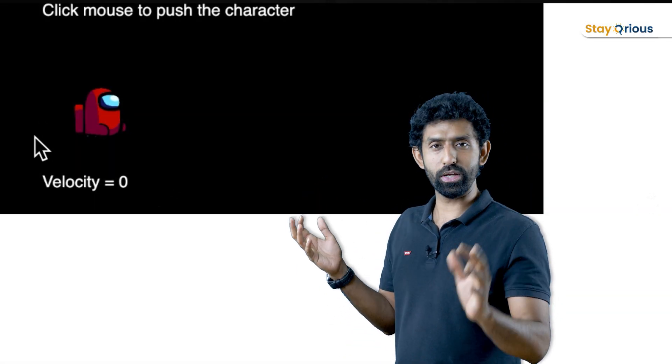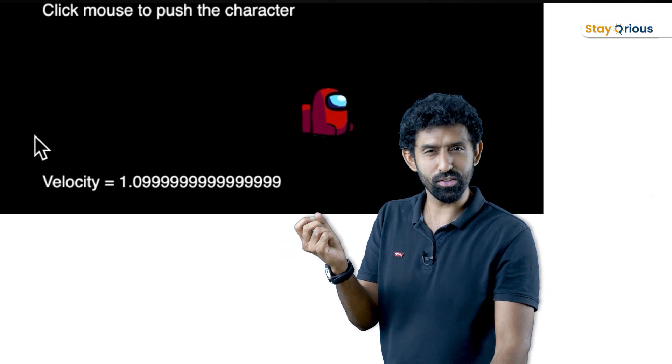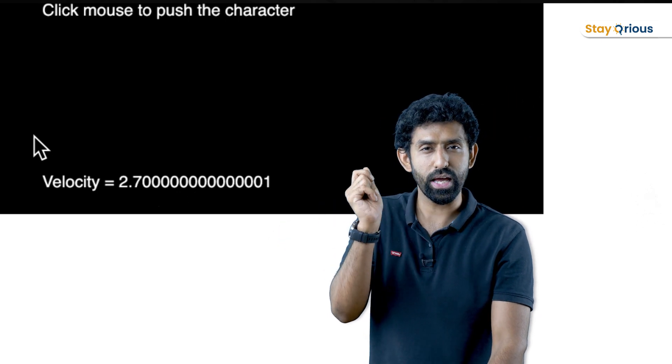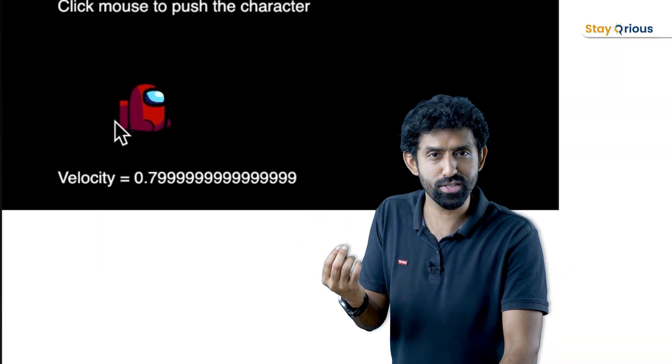A game development company is about to build a variation of Among Us which has physics — objects have velocities, characters have velocities, and you can push them. What they want you to build is a version where there's one character just floating in space. When you click the mouse, the character feels a force and starts moving, keeps that velocity — real world physics. So at the end of today you're going to be building an Among Us character that reacts to forces.